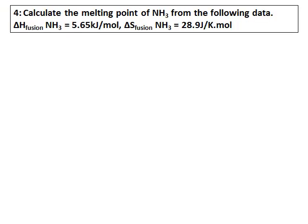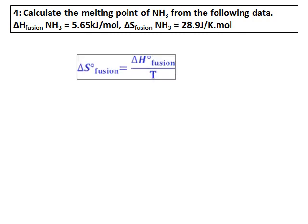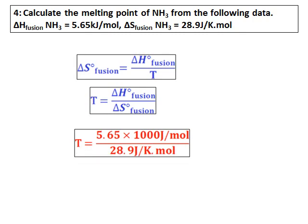Calculate the melting point of ammonia given delta H fusion and delta S fusion of ammonia. Use the relation delta S0 fusion equals delta H0 fusion divided by T, where T is the melting point. Substitute the values and solve for T. Be careful to convert the unit of delta H into joules to match the units of delta S.